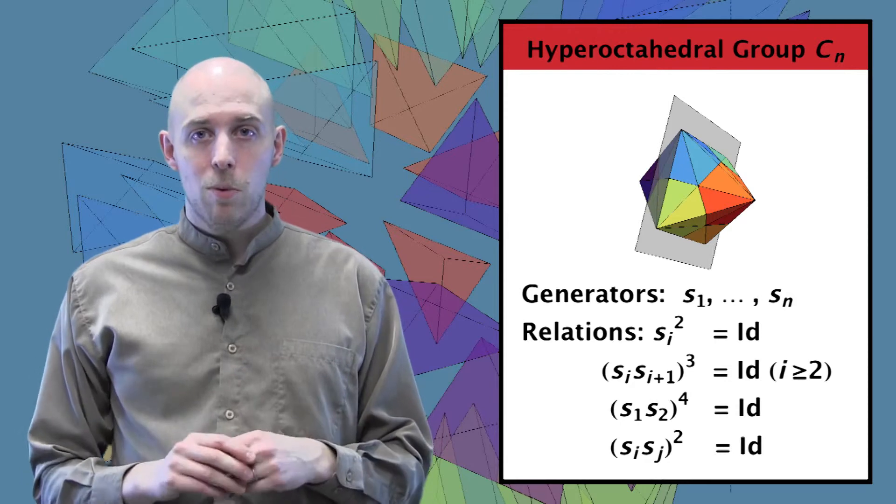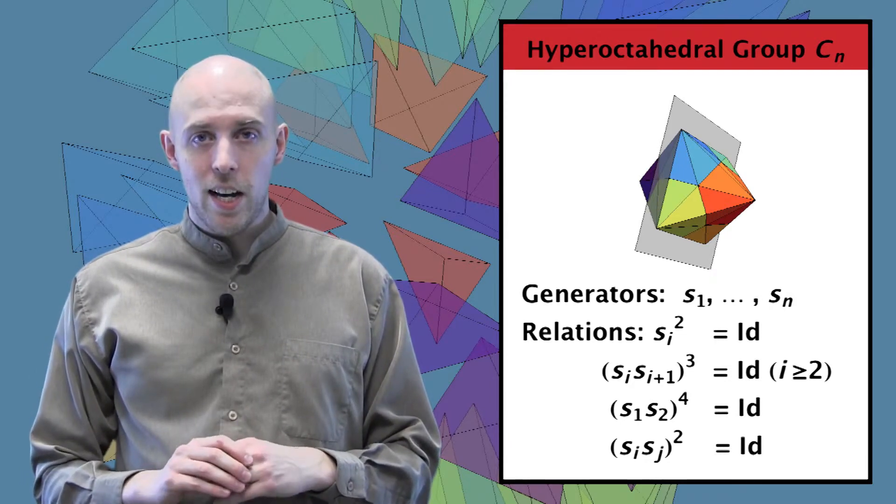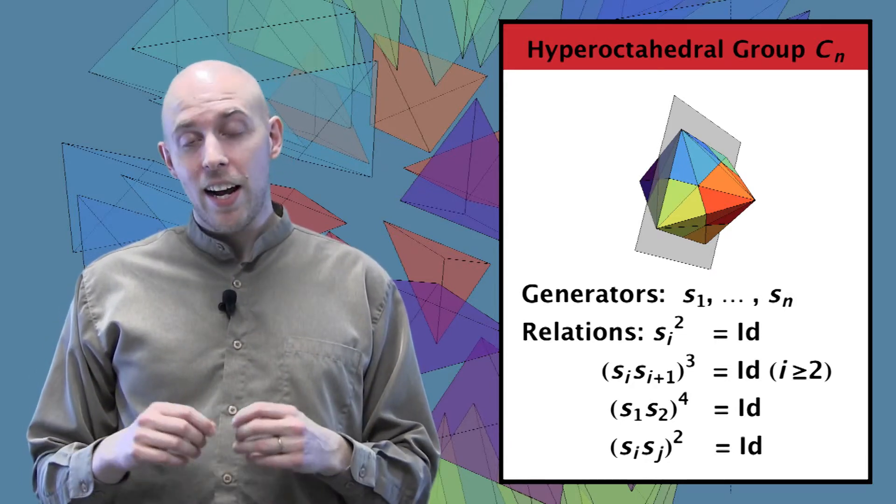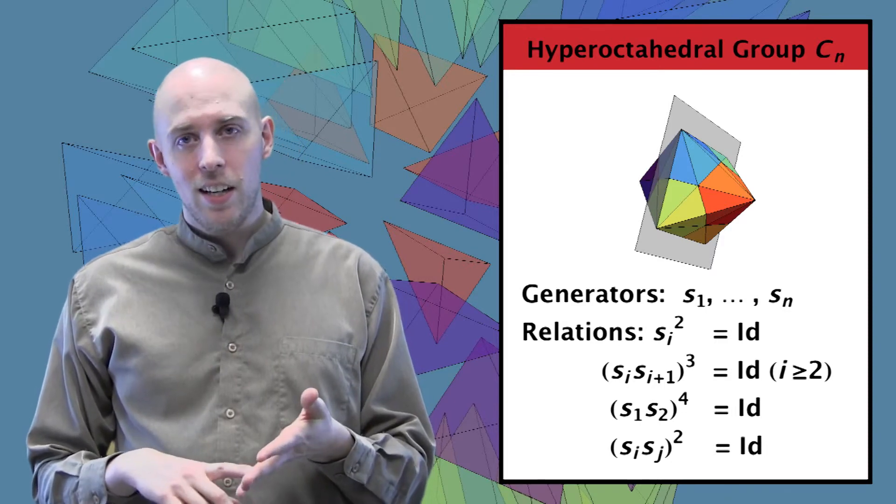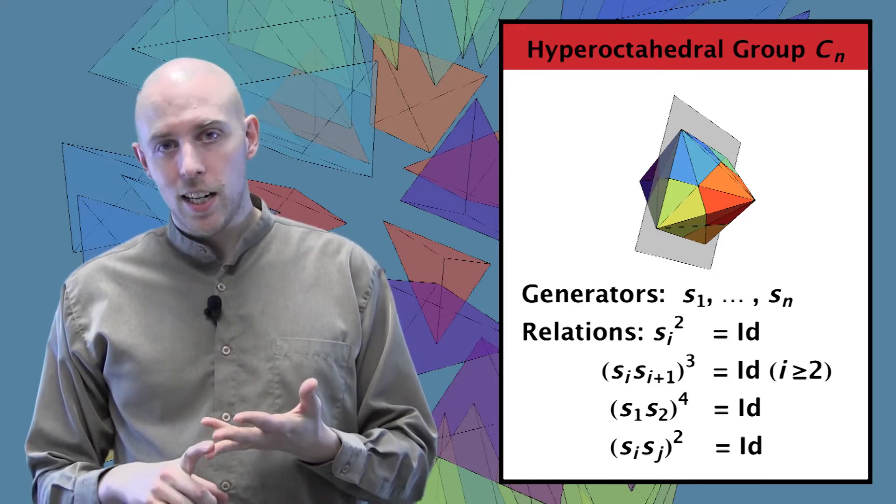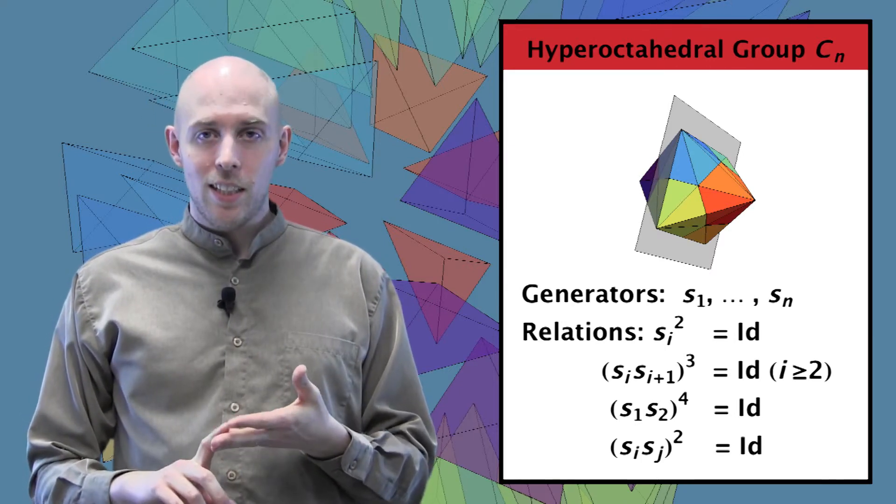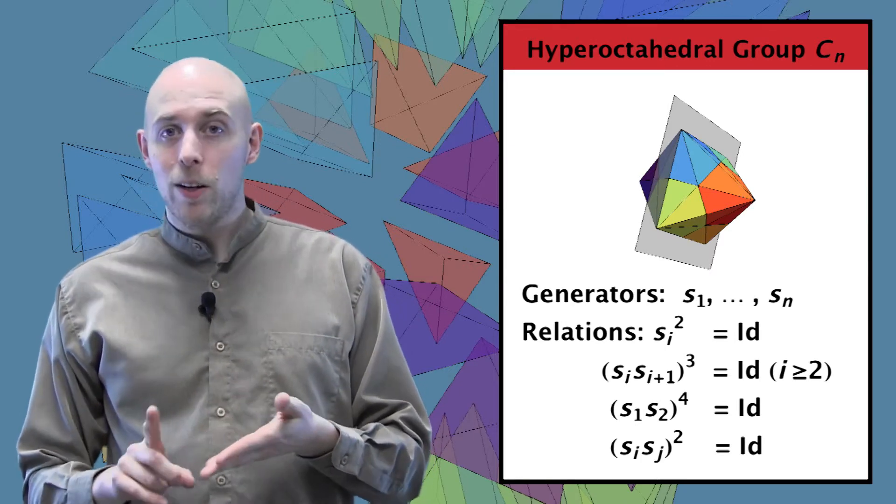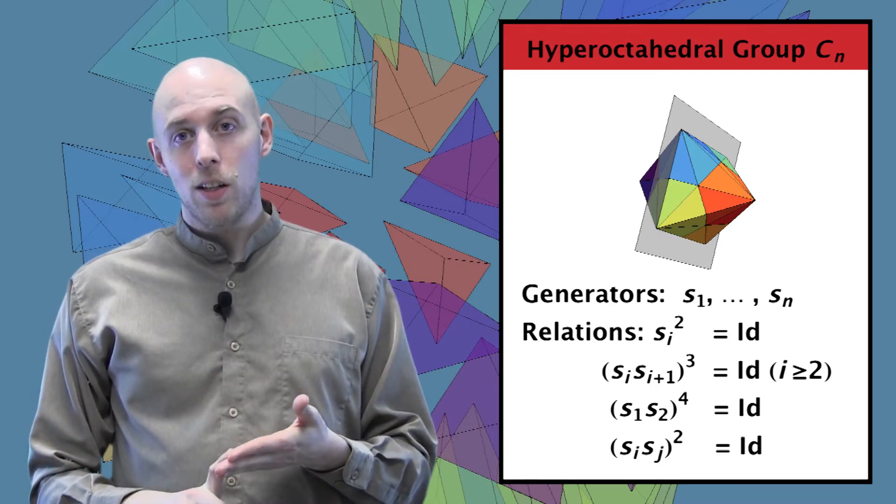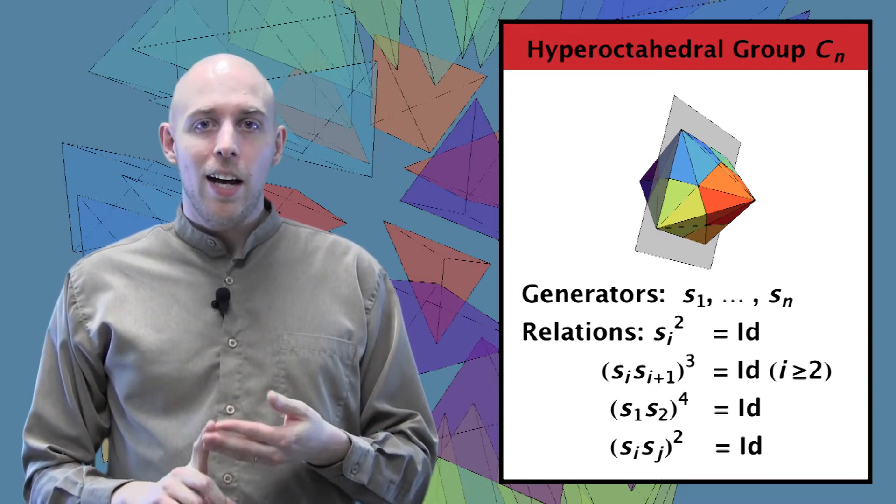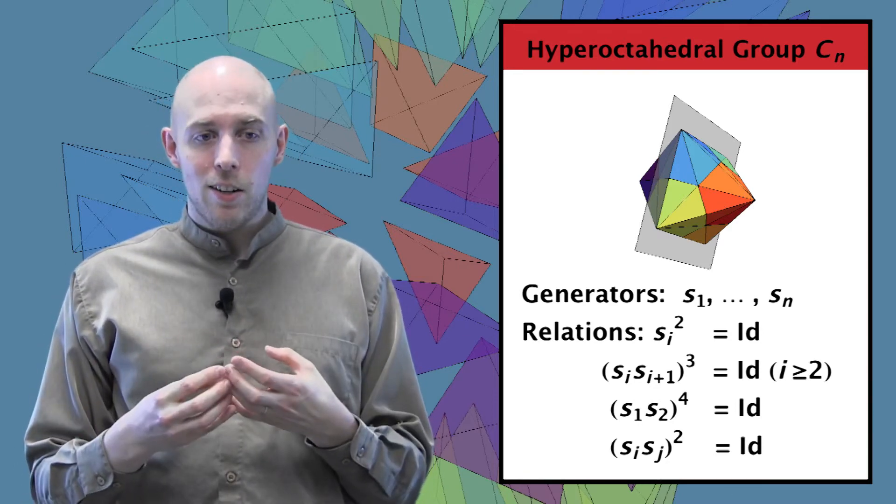So in general, the hyperoctahedral group Cn is generated by n generators S1 through Sn, with relations of the form Si² equals the identity. (Si Si+1)³ equals the identity, except for when i is 1, in which case (Si Si+1)⁴ equals the identity. And when you have non-consecutive generators, they commute.